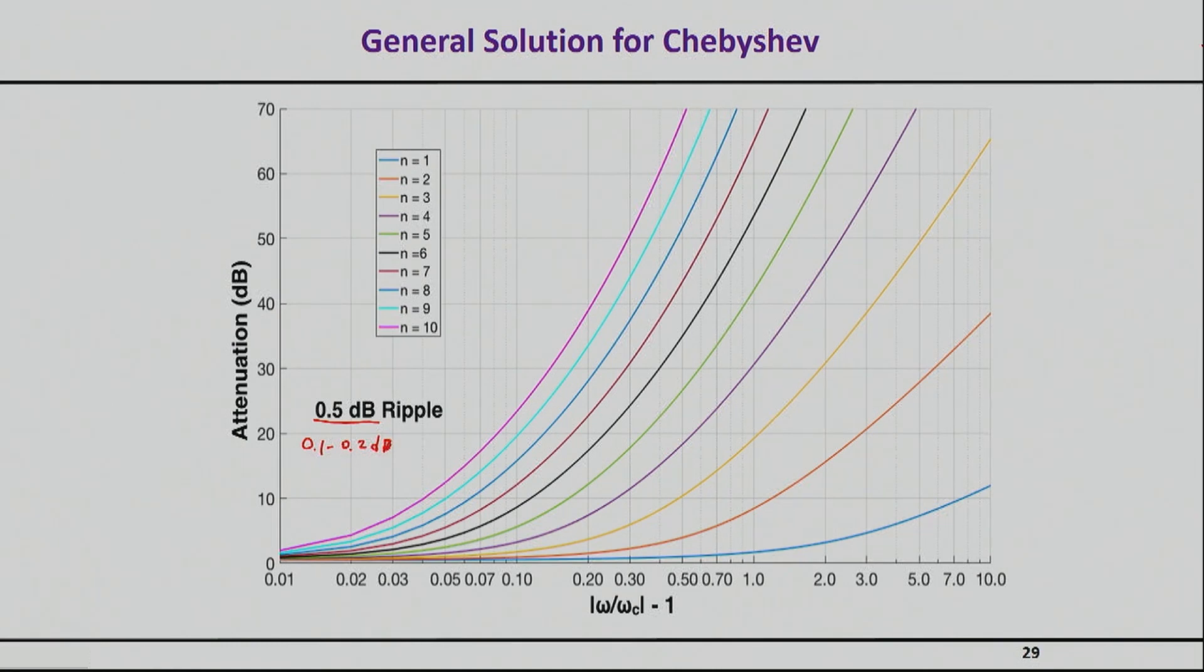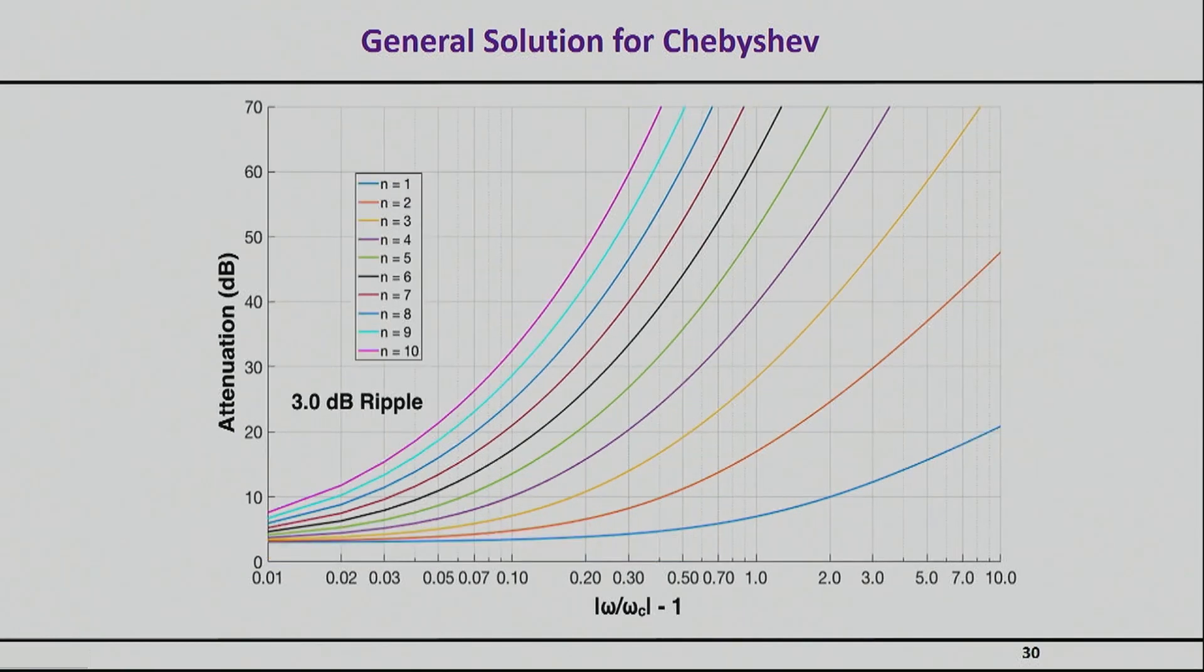But nevertheless, I've given you the equations so you can very quickly derive the equations that you need and the elements that you need. These graphs that you see here work in a very similar way—you just select the order of the filter based on the needed attenuation. This is something, for example, that you will do in the project for this class.